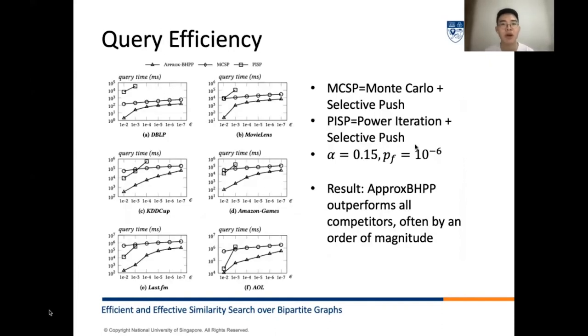We compare our solution ApproxBHPP against the two baselines introduced earlier. In terms of query efficiency, we set alpha to 0.15 and the failure probability in Monte Carlo to 10 to the power of minus 6. ApproxBHPP consistently outperforms the two baselines, often by an order of magnitude speedup.